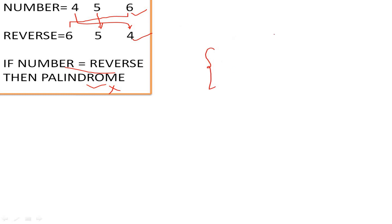To reverse a number, you just need three simple lines of code. First, take that number. Then, apply modulus by 10 — this extracts the ones place digit.